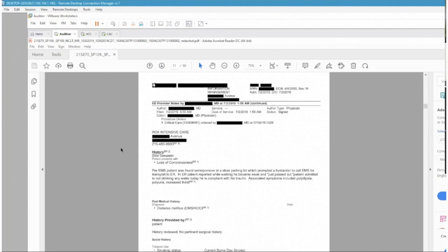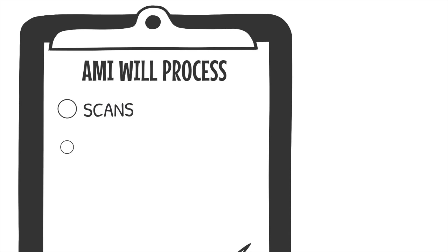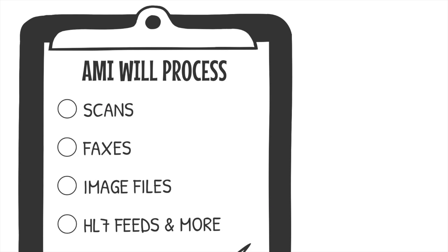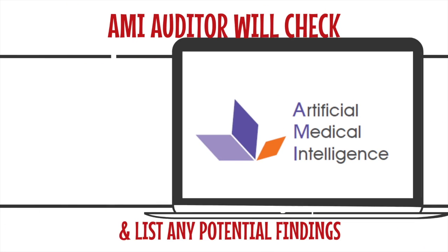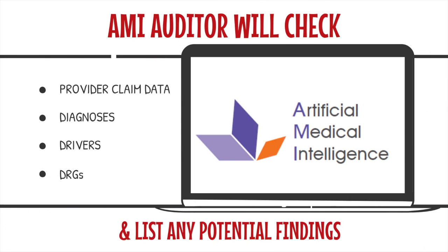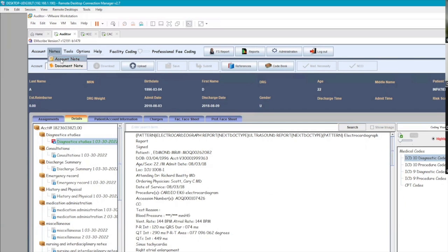On the other hand, AMI's auditor solution was specifically designed to conduct DRG and clinical validation audits. It's equipped with algorithms and rule sets that can recognize and interpret medical codes and identify any discrepancies between the medical record and the billed services. Additionally, the auditor solution is built with expert knowledge in medical coding and billing regulations, ensuring that the audits are conducted accurately and in compliance with industry standards.